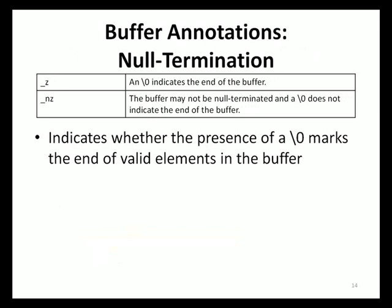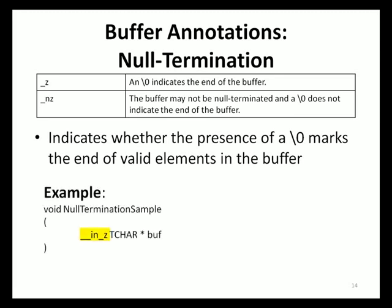The annotations found in the null termination category are used to indicate whether the presence of a null termination character should be used to indicate the end of valid elements in a buffer. The _z annotation specifies that a null terminating character indicates the end of the buffer, while the _nz annotation indicates that the buffer may not be null terminated. In sample code illustrating _z, a function called null_termination_sample is declared with a single pointer argument buff, annotated with _in _z, indicating the function will only read from buff and that buff will be null terminated.